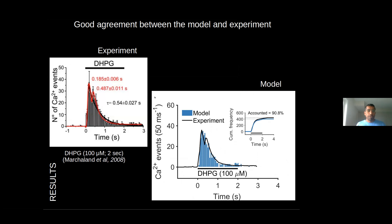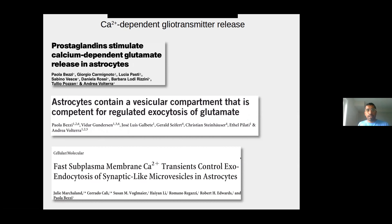We first validated our model against these experimental findings. The experimental histogram from that study, pooled from a large number of processes, shows an exponential decay of calcium events when DHPG stimulus was applied for two seconds. Using the same protocol to mimic the experiment, our model reliably captured this histogram statistic, accounting for close to 90% of events triggered by a single DHPG application.